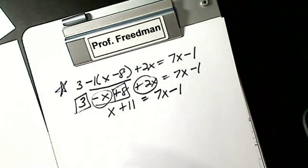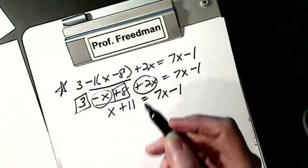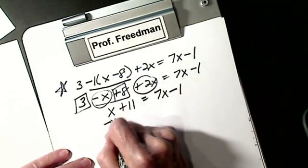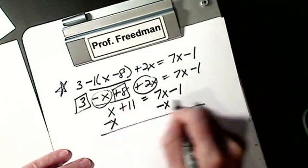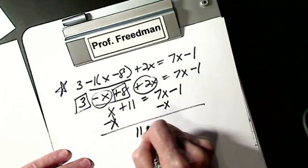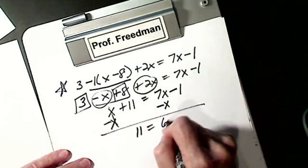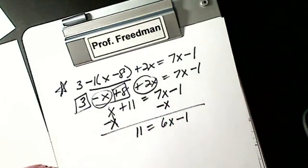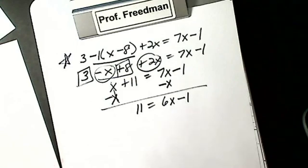Then I want all my X's on one side. This time I'll subtract X. I get 11 equals 6X minus 1. You forget what you're doing — you think of your goal.